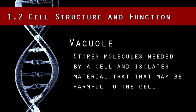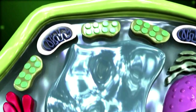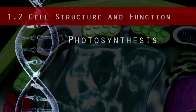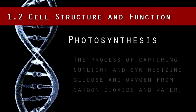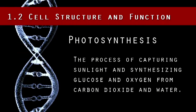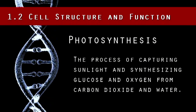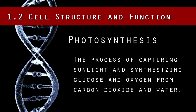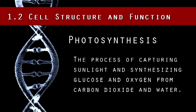The final difference is plant cells have an additional organelle called a chloroplast. The chloroplast is the site of photosynthesis in a plant cell. Photosynthesis is the process of capturing sunlight and synthesizing glucose and oxygen from carbon dioxide and water.